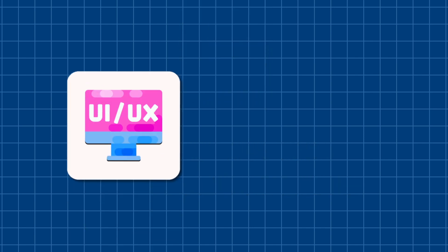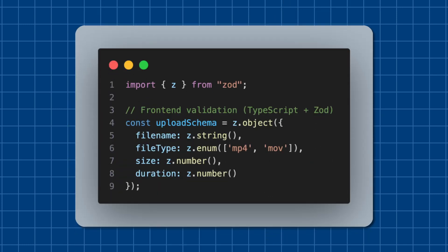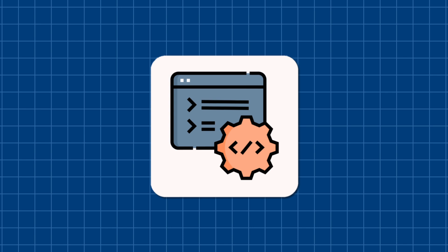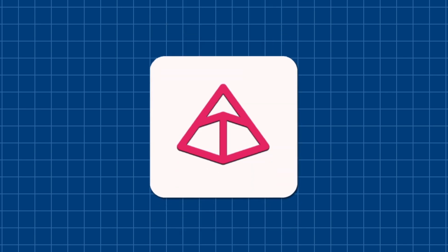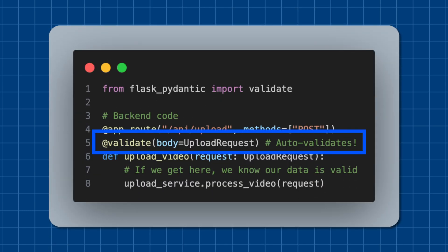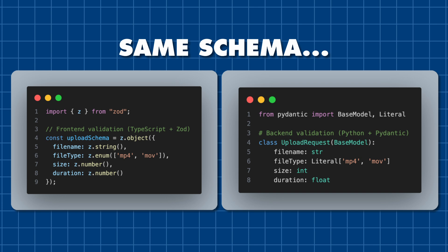To validate this data, on the frontend we could use a library like Zod and define a schema. Then, before sending a request to the backend, the frontend can validate against this schema. The backend would also need to define the same schema using a library like Pydantic, and when it receives the request from the frontend, it would validate the request against this Pydantic data model. But there's a big problem here — we're defining the same schema twice on both the frontend and the backend, which means if we want to support a new file type, we need to remember to update the schema in both places. Doing this manually is really error-prone and can lead to a lot of inconsistencies.